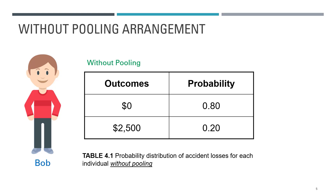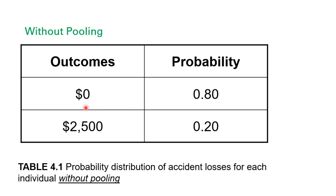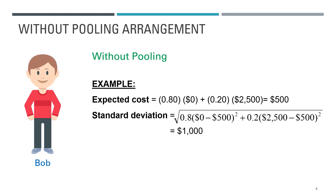To better understand what pooling is and its impact, let's look at some examples. Assume there is no pooling arrangement yet. Bob has a 20% chance of being involved in an accident resulting in a loss of $2,500, and an 80% chance of no accident. The probability distribution for accident losses is summarized in this table. Note that the distribution is skewed — there is a high probability of zero loss (80%) and a relatively small probability of a large loss (20%). Without pooling, Bob's expected cost is $500 and the standard deviation is $1,000.